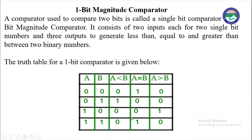This is the truth table for a 1-bit comparator. We have two binary inputs, A and B. The possible combinations of these two numbers will be 4, and we have three outputs: A less than B, A equal to B, and A greater than B. For the first case when A and B are both 0, they are equal, so the output A equal to B will be 1 and the other outputs A less than B and A greater than B will be 0.